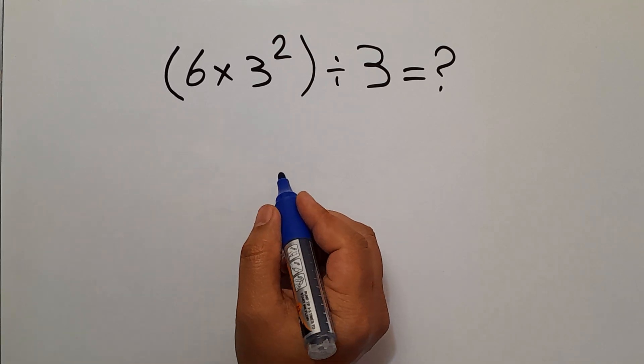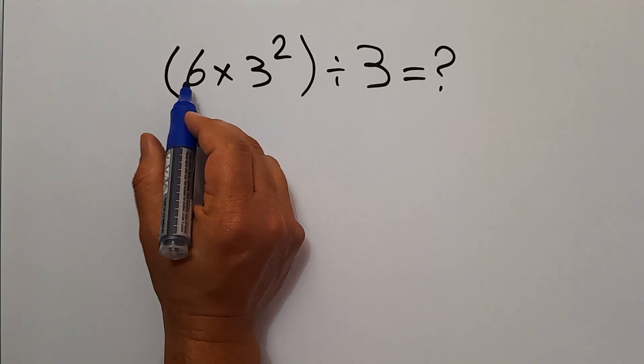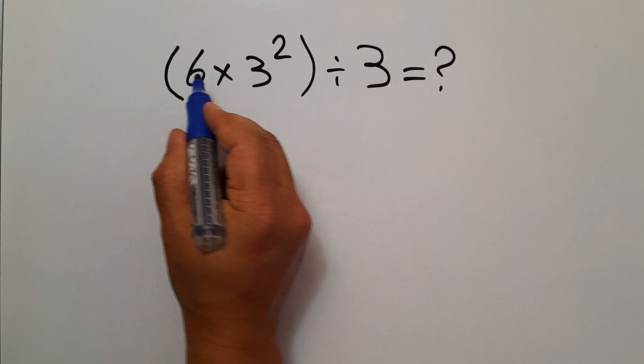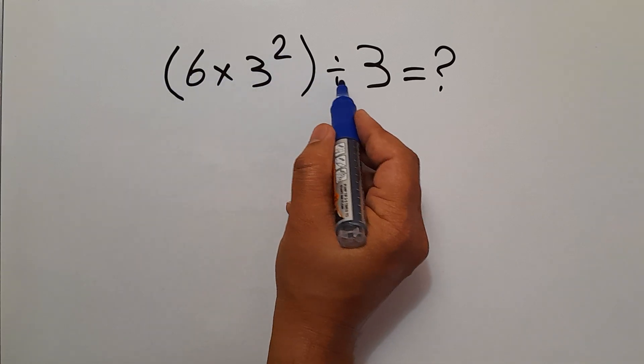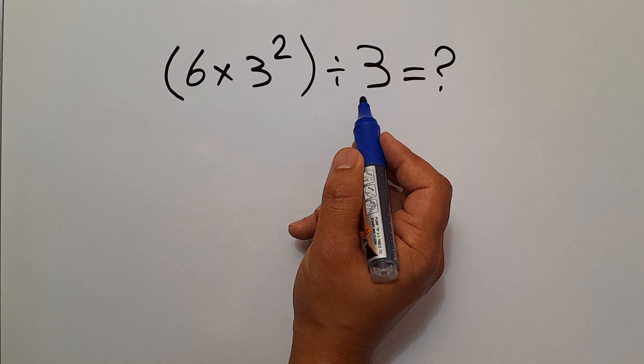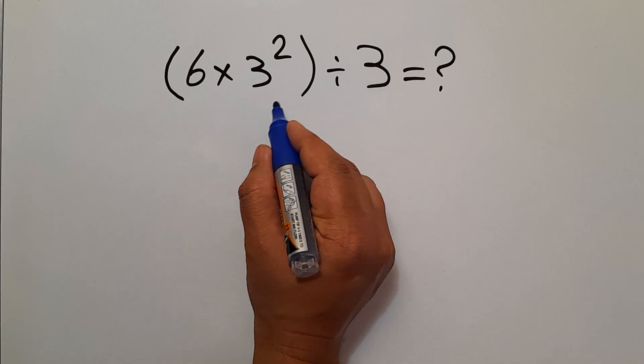Hey guys and welcome to this video. In this video we want to calculate this expression: parentheses 6 times 3 squared, then divided by 3. Are you ready to solve? Let's go ahead and get started according to the order of operations.